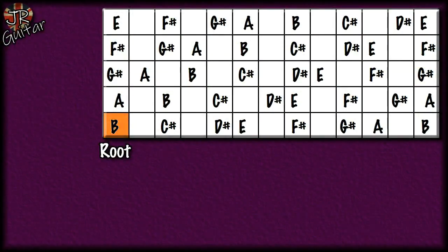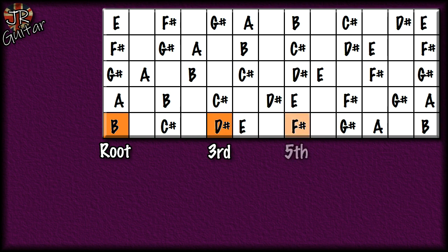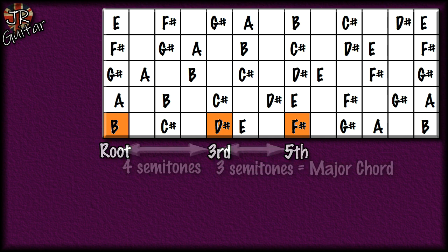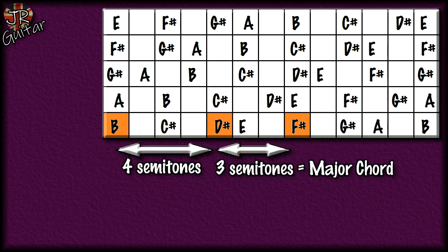Next we do the root-third-fifth from the B note in the scale: B is the root, D# is the third, and F# is the fifth. Measuring that up, we again have a four-semitone interval followed by a three-semitone interval — that gives us a major chord. Because we're starting on B, it's a B major chord.